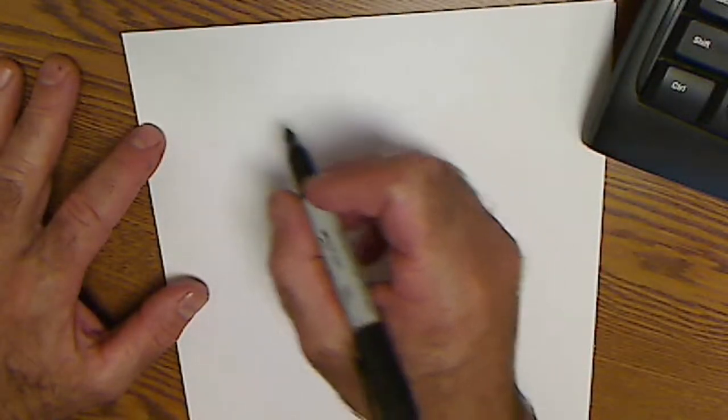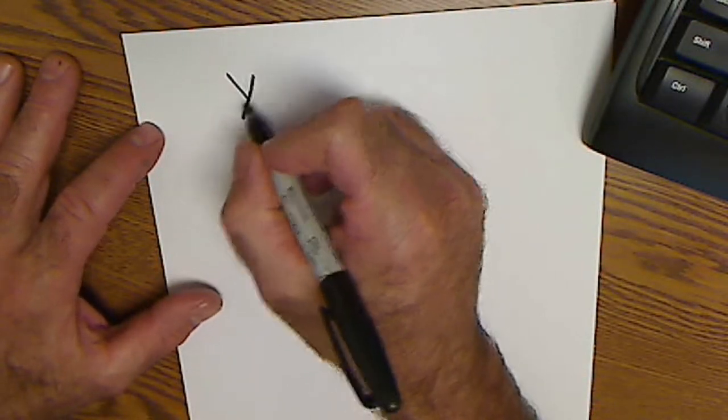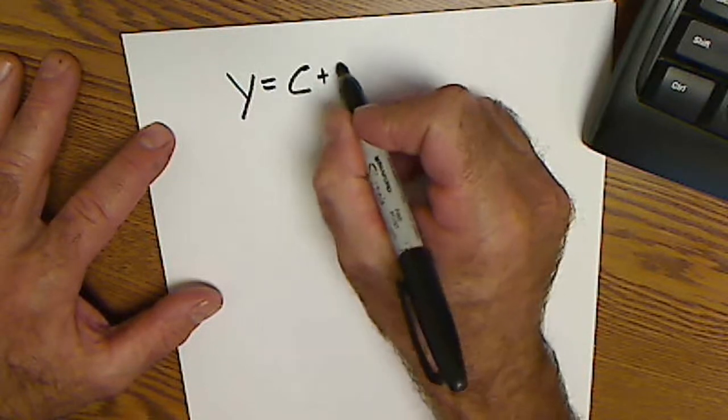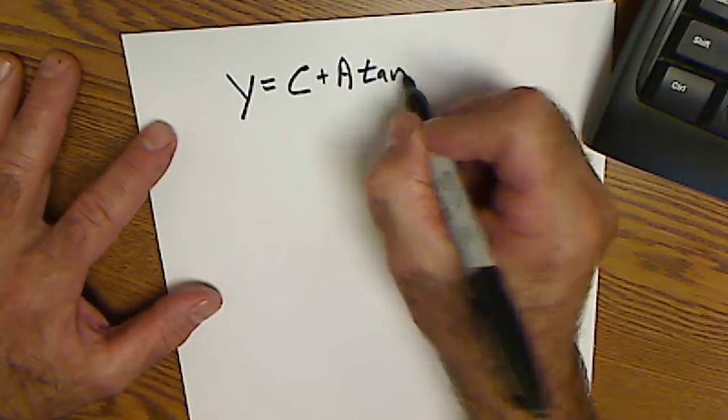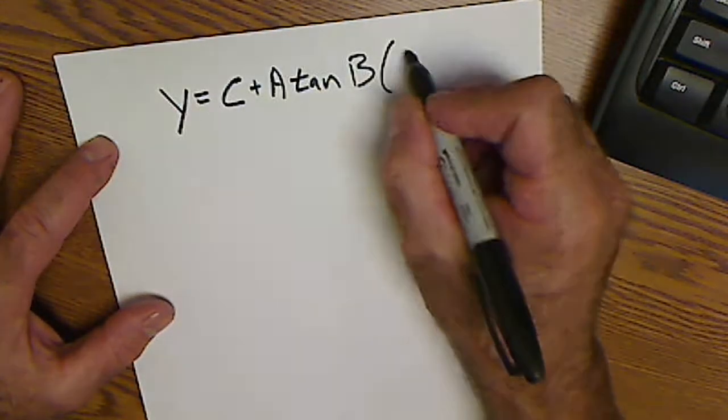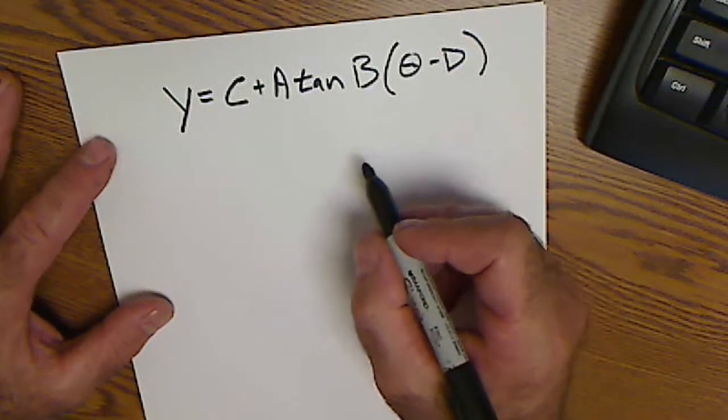How to graph a tangent graph. We'll start in degrees. y equals C plus A tangent B(theta minus D). That's a general equation.